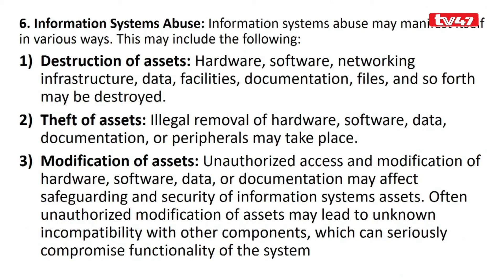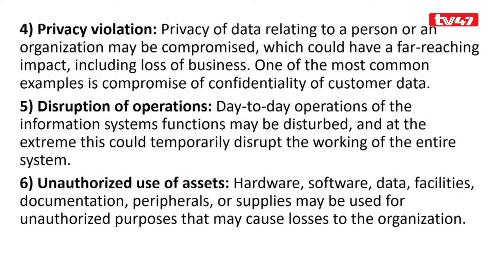Another requirement addresses information system abuse, which may manifest as destruction of assets, theft of assets, or modification of assets — including hardware destruction, theft of hardware, software, and data, and modification by unauthorized access. Privacy violation involves people accessing information they are not allowed to. Disruption of operations includes email bombing that renders organization systems unavailable. Unauthorized use of access may involve internal staff or external people.